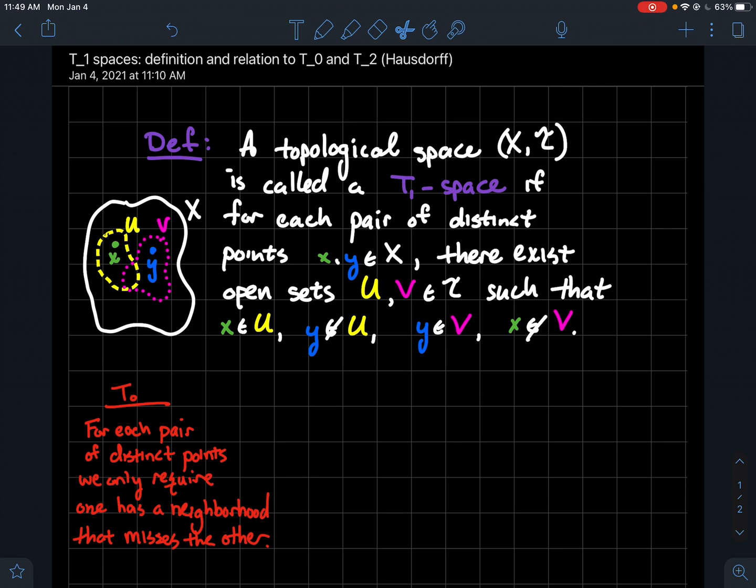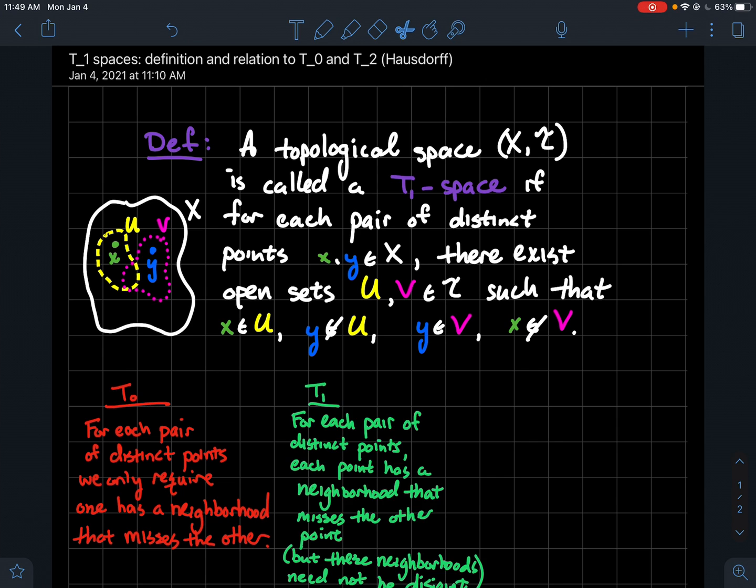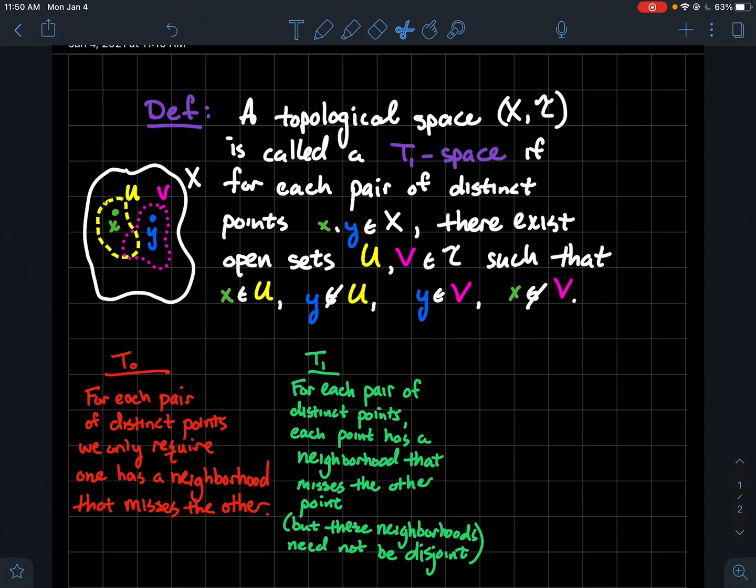So what's the relationship between T0, T1, and T2? This is another concept of what it means to separate points in a topological space. These are different notions of how we can use open sets to separate points. So for T0, if you watch the video on T0 spaces, you remember T0 meant that for each pair of distinct points, we only require that one of the points has a neighborhood that misses the other point. Now in T1, what do you notice in the picture? For each pair of distinct points, now we require that each point has its own neighborhood that misses the other point. So I hope that you see the difference between T0 to T1 there. T0, I just needed one of the points to have a neighborhood that misses the other. T1, I need each of the points to have their own neighborhood that missed the other point.